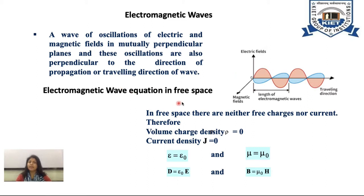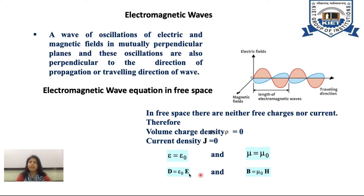Electromagnetic Wave Equation in Free Space. In free space, there are neither free charges nor current. Therefore, volume charge density rho is equal to 0 and current density J is equal to 0. In free space, permittivity epsilon equals epsilon naught and magnetic permeability mu equals mu naught. The relation between electric displacement vector and electric field is D equals epsilon naught E, and magnetic induction B equals mu naught H.